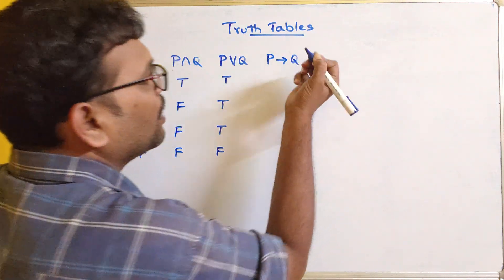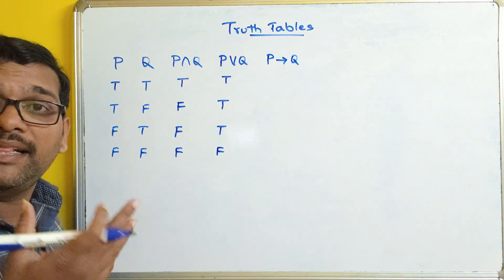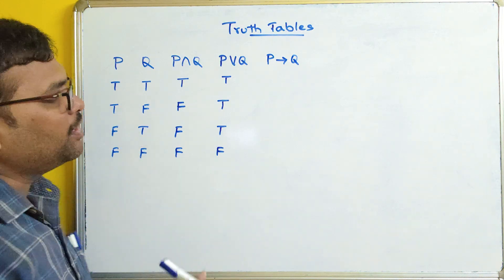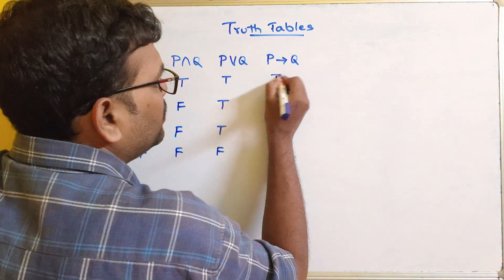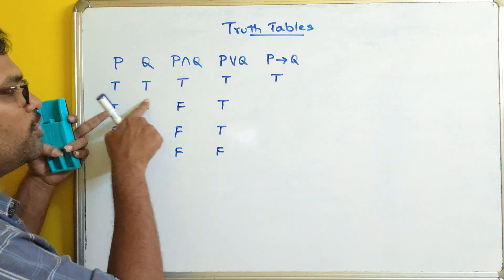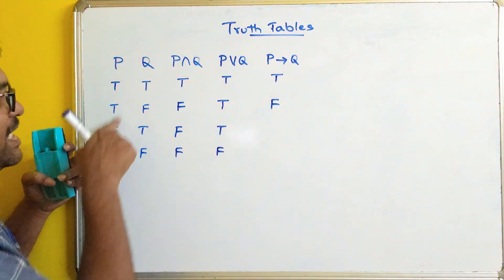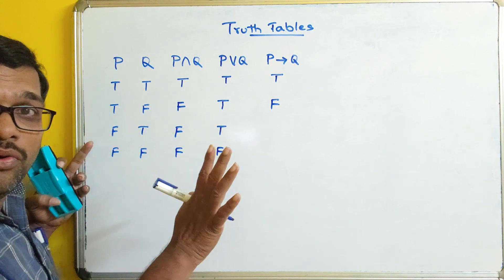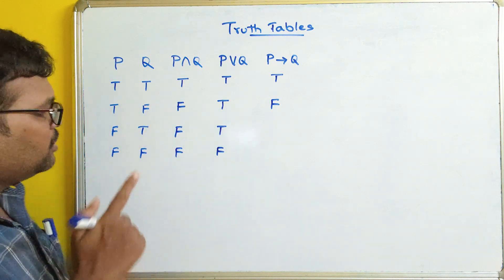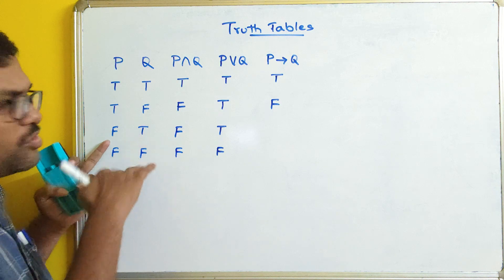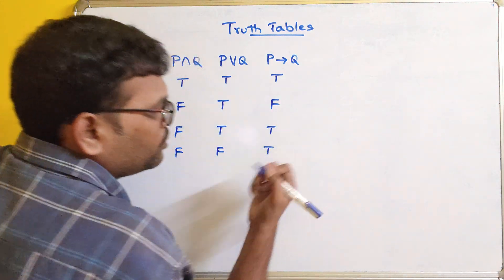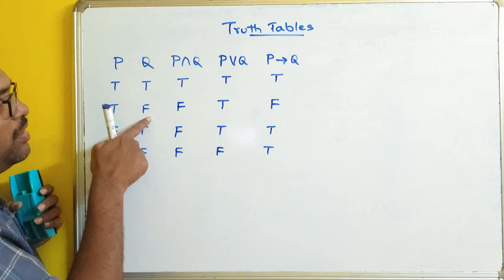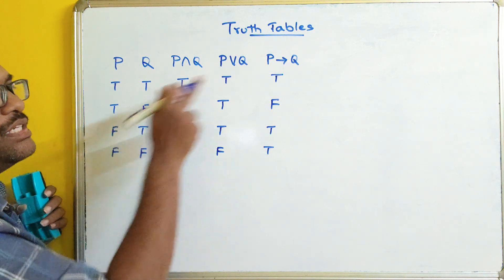Next, implies — that is, if P then Q. If P is true, then Q should be true. So: true and true gives true; true and false — P is true but Q is false — gives false. If P is false, we are not saying what the result must be, so the remaining cases are true. False and true gives true; false and false gives true. Only when P is true and Q is false do we get false.